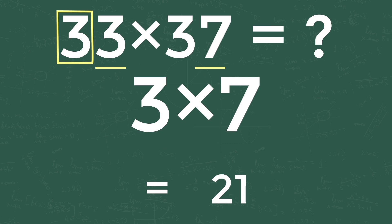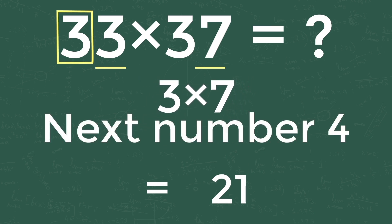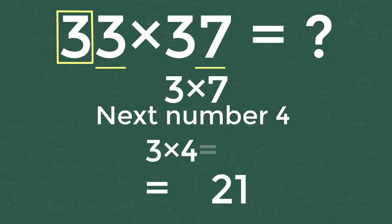Take the tens number and multiply it with its next number. In our problem tens number is 3, so the next number of 3 is 4. Multiplying 3 and 4 getting 12. Write that number in hundreds and thousands. So the answer is 1221.